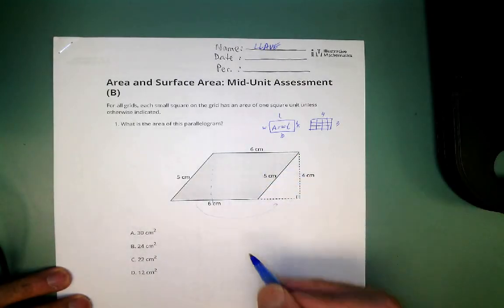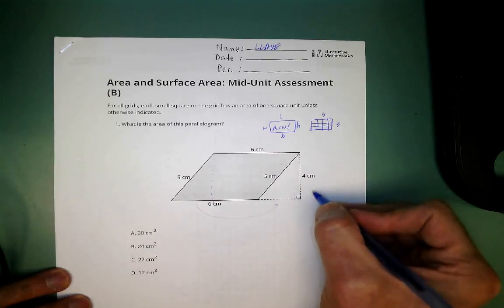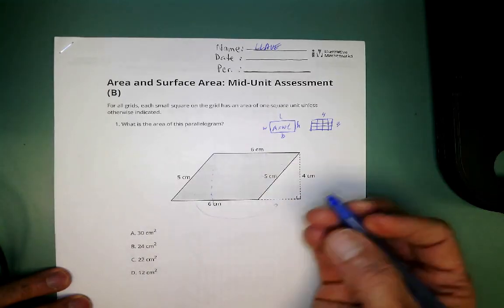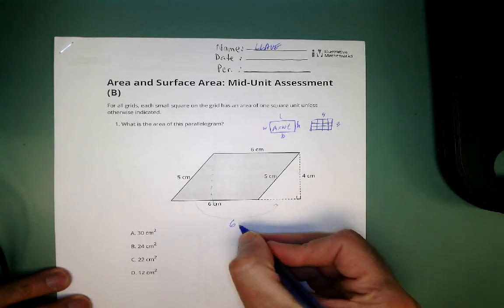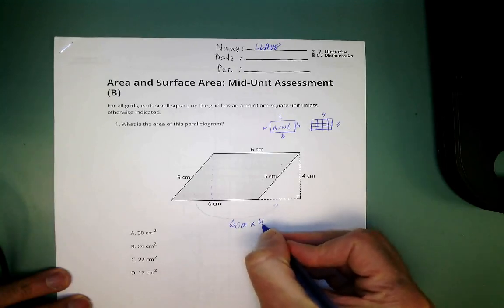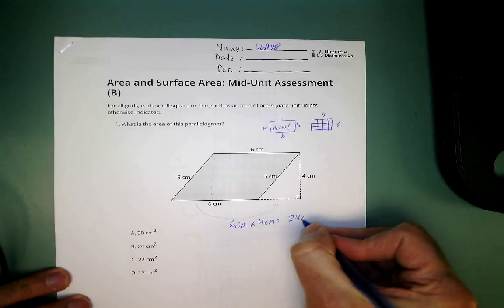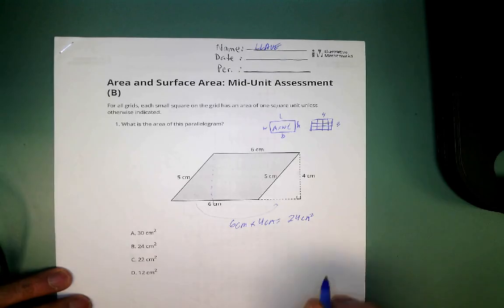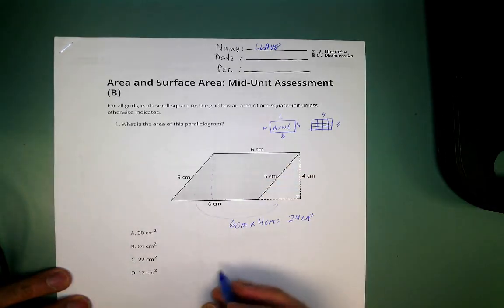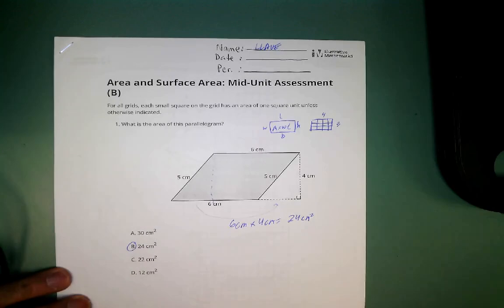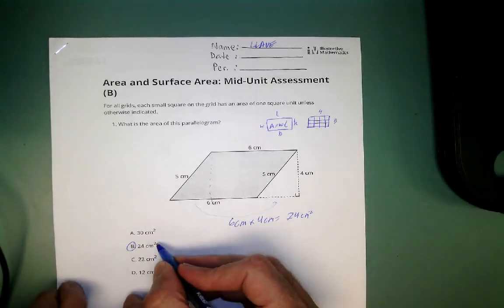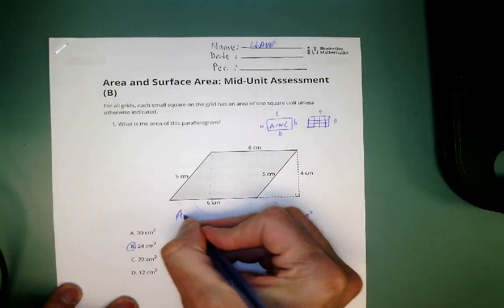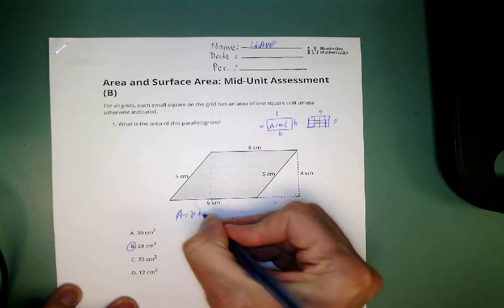So this parallelogram is four tall and six wide. Even though you cut off a piece, you put it right back on, so it's still six. Six times four is 24, and six centimeters times four centimeters is 24 square centimeters. That's what area is — how many squares does it take to cover the shape. The answer is 24 square centimeters. You get one point for the right answer and one point for showing your work.